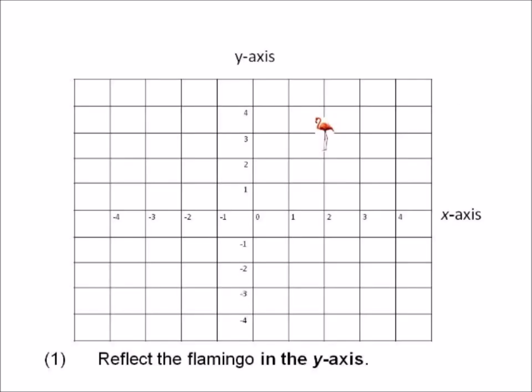Number one: reflect the flamingo in the y-axis. First you have to identify the y-axis — already identified — then you would flip or reflect the flamingo on the other side of the y-axis. That is what 'in the y-axis' means: on the other side of the y-axis. The red line shows how many spaces it was to the right, so you count the same number of spaces to the left and you flip or reflect the flamingo.